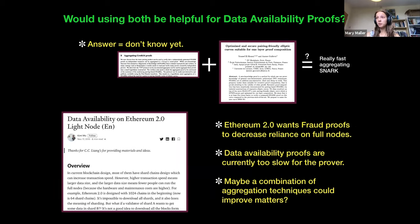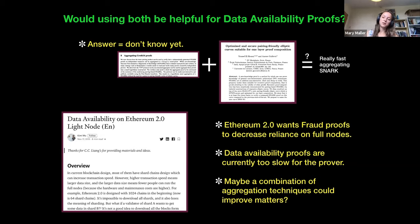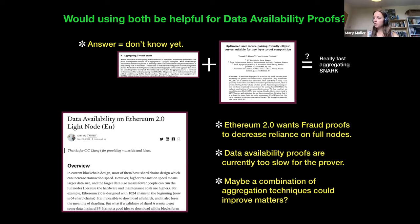I'm also hopeful this approach might be helpful for data availability proofs — another topic the Ethereum team has been worrying about lately. They want to generate fraud proofs so clients can have more faith that full nodes are providing correct information. But they run into an issue: if the data is not available, how can you prove someone hasn't behaved honestly? We haven't yet found something efficient enough for ETH 2.5, but people are working hard on it. If you have a Merkle tree with lots of SNARK proofs and you want to verify them all in one go, that is something we're able to do.